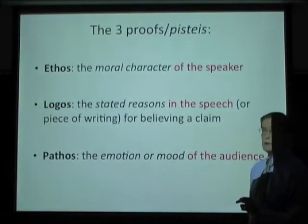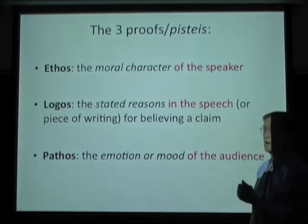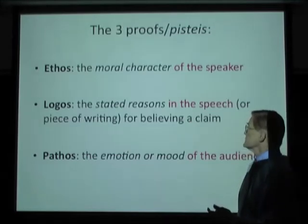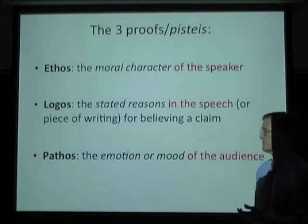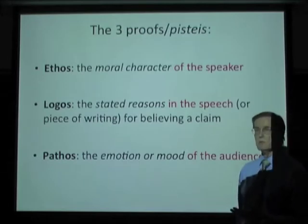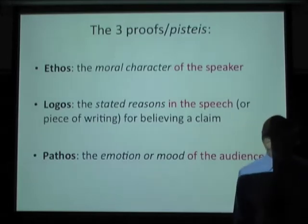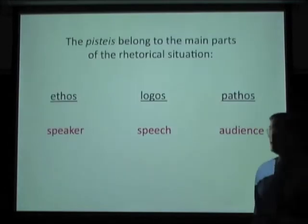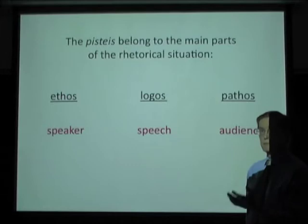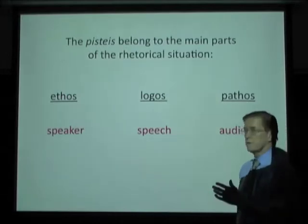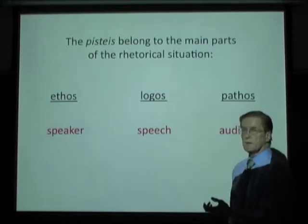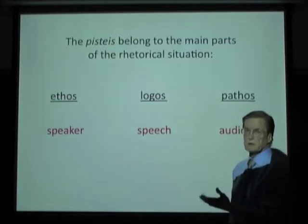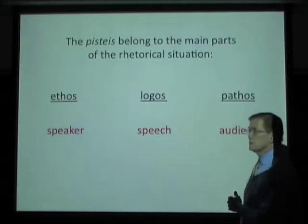The three main proofs or pisteis are: ethos — the moral character, or apparent moral character, of the speaker; logos — the stated reasons in the speech or piece of writing for believing a claim; and finally pathos — the emotion or mood of the audience. It's important to remember that these pisteis are associated with the three main parts of the rhetorical situation: ethos derives from the speaker, logos derives from the speech or what the speaker says, and pathos derives from the audience.